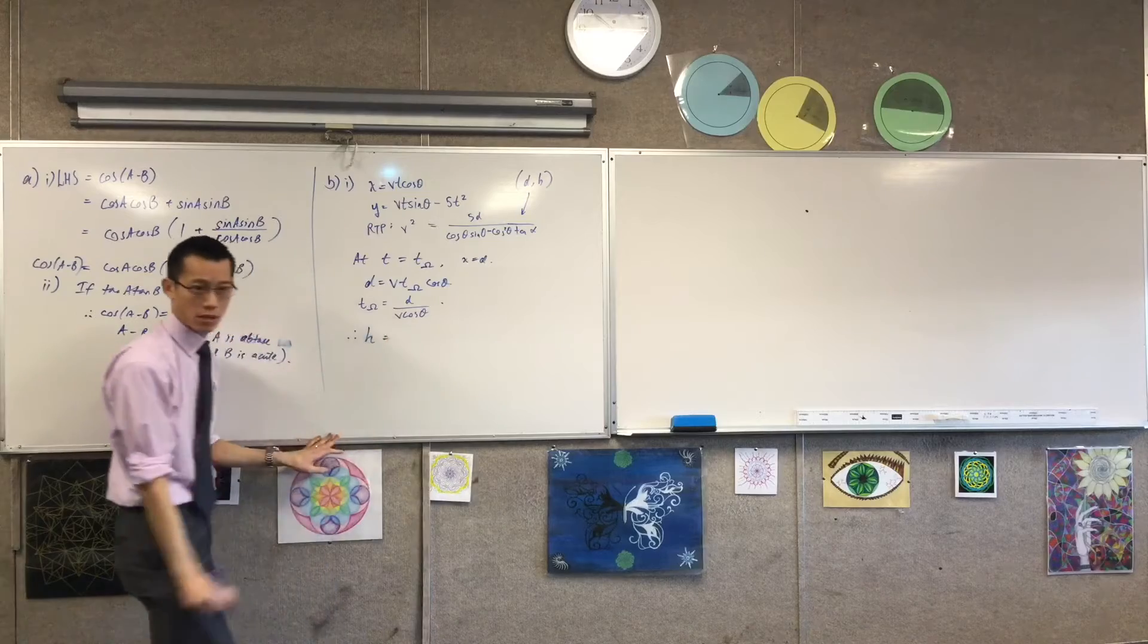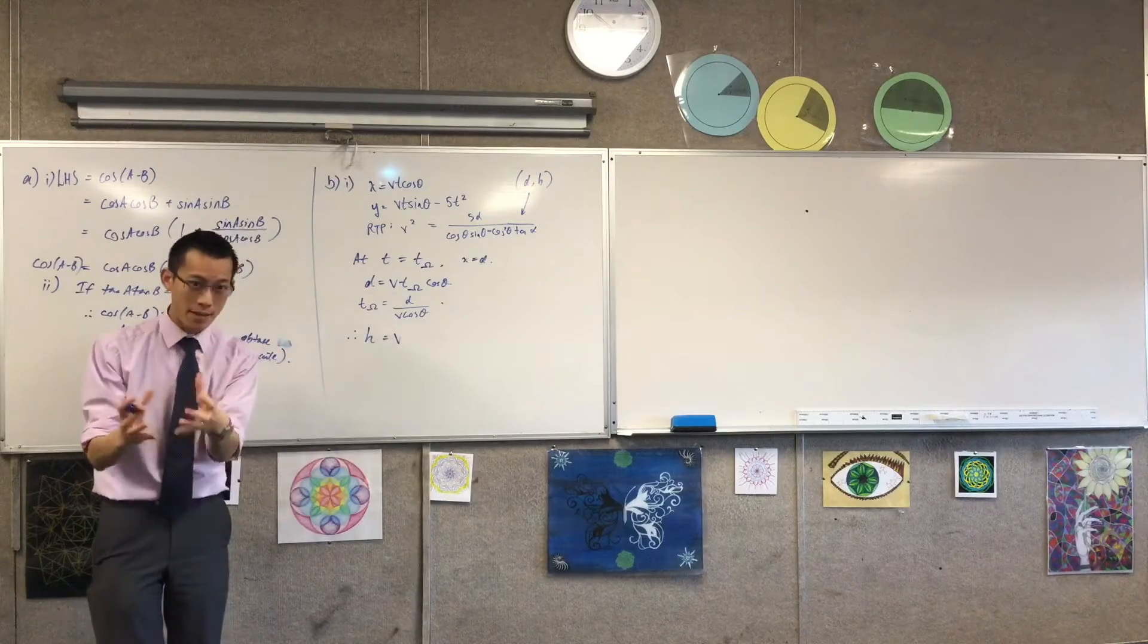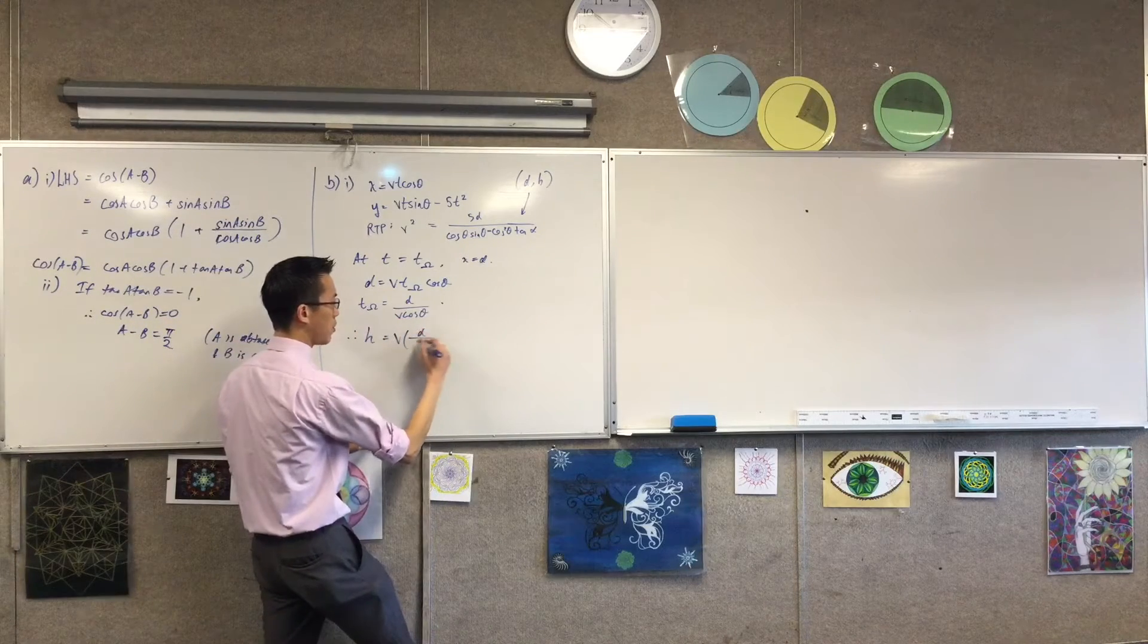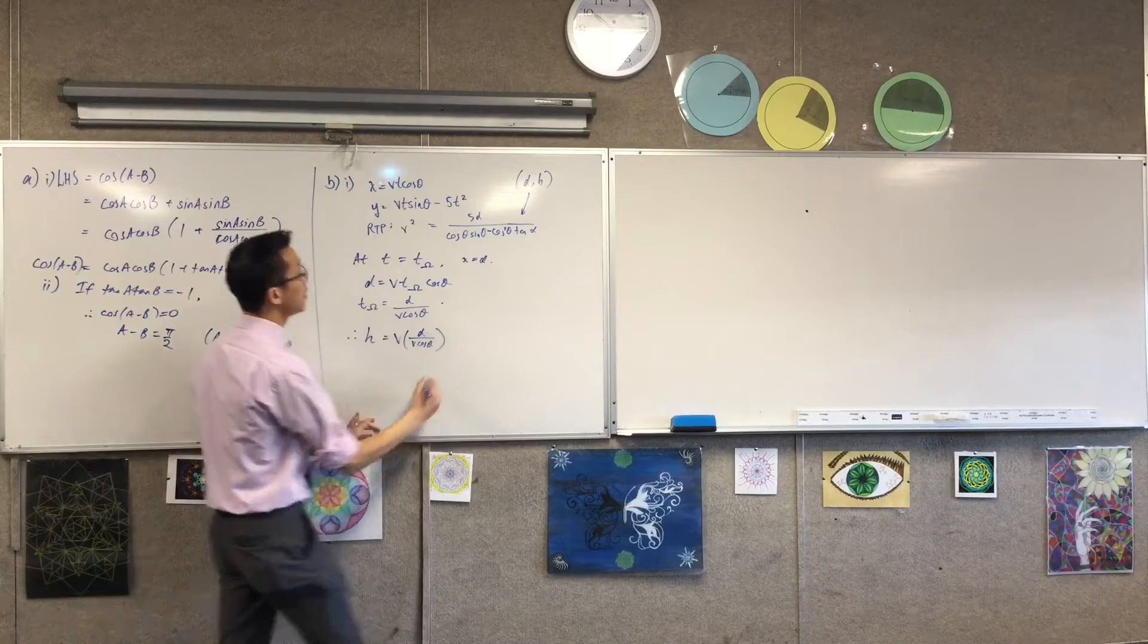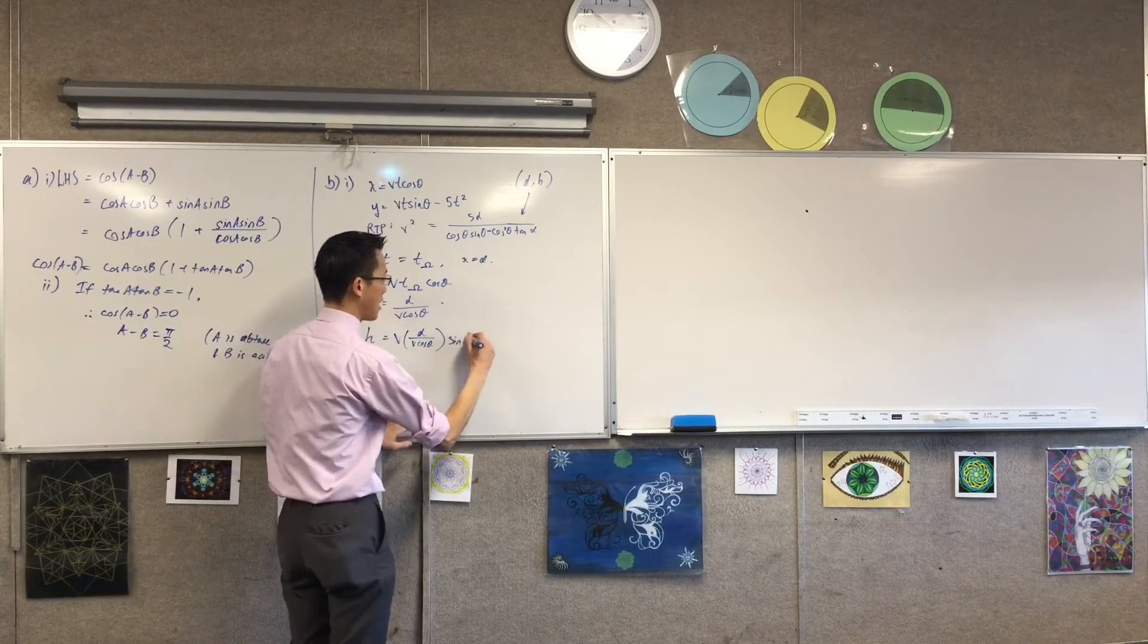I'm going to say h, that's the vertical component, equals v times the time I am now, this time omega thing, which I have here, d on v cos theta, times sine theta. I'm just substituting in at the moment, haven't done any simplifying whatsoever.